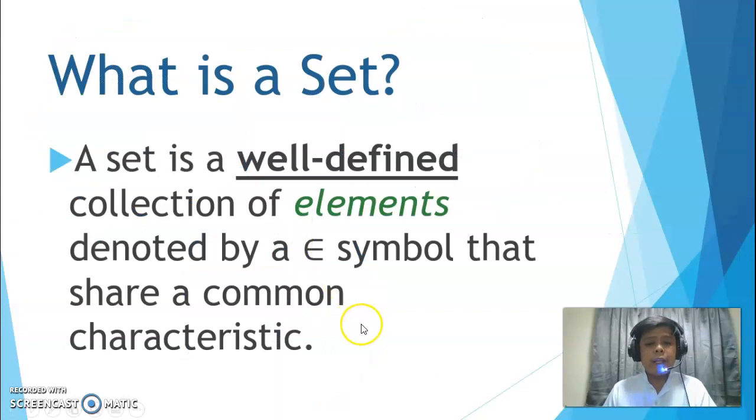What is a set? A set is a well-defined collection of elements denoted by this symbol that share a common characteristic. When we say well-defined, those objects, those elements, must have similar characteristics. And it should be very clear what characteristics they have. We call a group a set. The members are called elements.